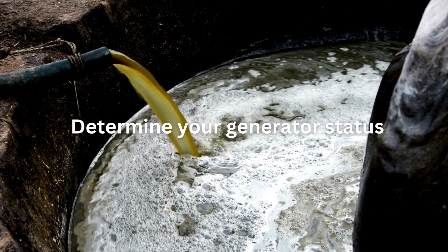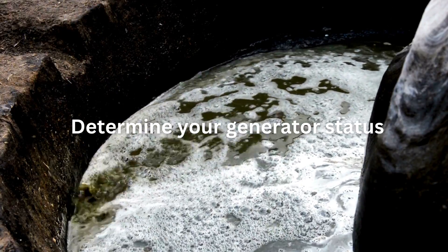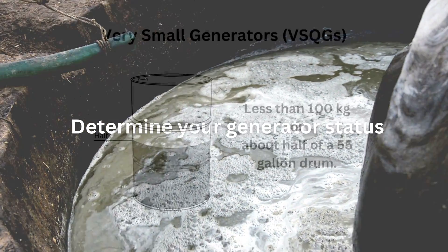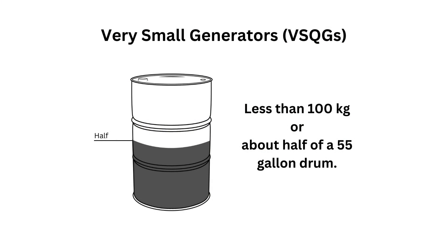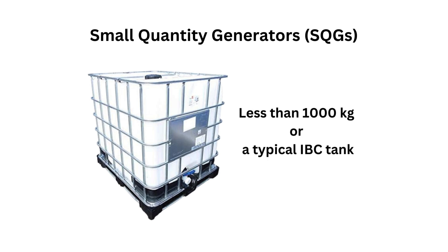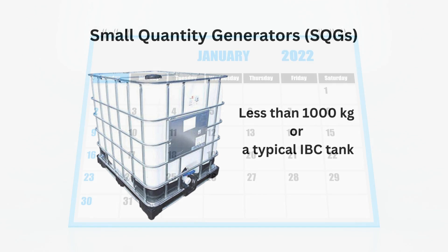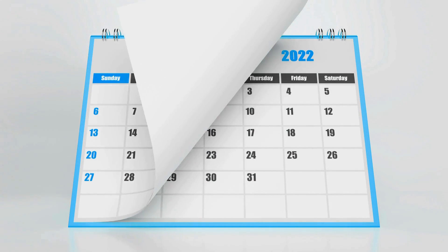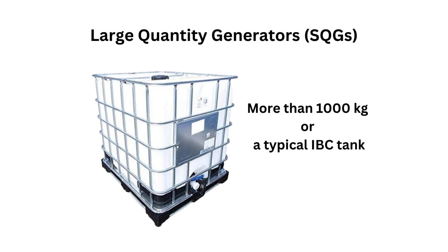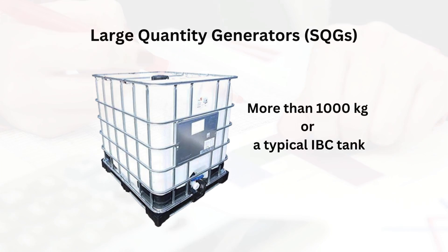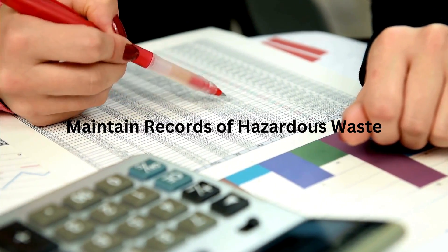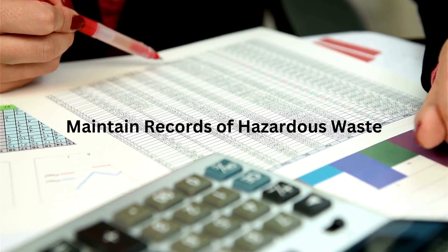Step 3: Determine your generator status. The volume of hazardous waste a business produces in a month determines its generator status. Very small quantity generators (VSQGs) generate 100 kg or less per month. Small quantity generators (SQGs) generate more than 100 kg but less than 1,000 kg per month, and may accumulate hazardous waste on site for 180 days without a permit. Large quantity generators (LQGs) generate 1,000 kg per month or more, or more than 1 kg per month of acutely hazardous waste. SQGs and LQGs must maintain records and report to Oregon DEQ every year.